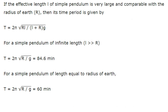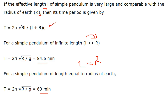If the effective length l of a simple pendulum is very large, comparable to the radius of the Earth, then the time period is given by T = 2π with l added to r, where r is the radius of the Earth. For a pendulum of infinite length, you can ignore l and just write r, giving T = 2π√(r/g) = 84.6 minutes. If the length equals the radius of the Earth, it gives T = 2π√(r/g) = 60 minutes.